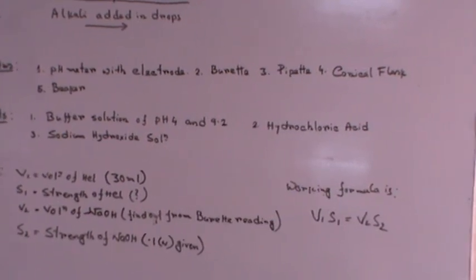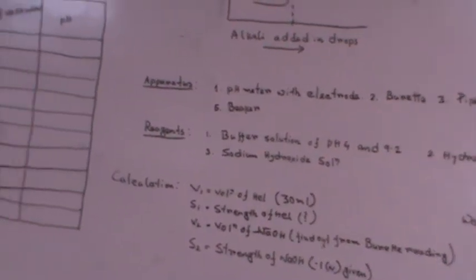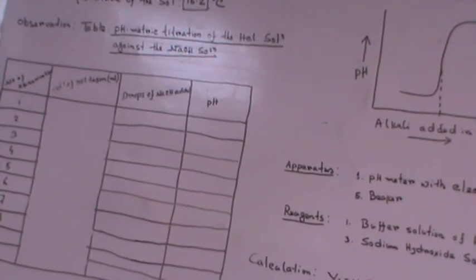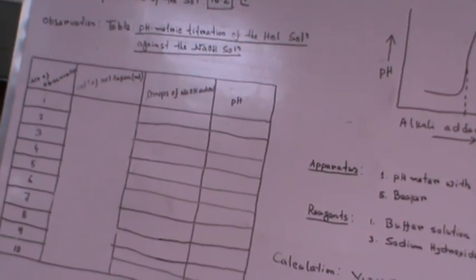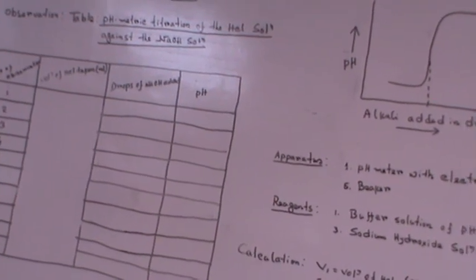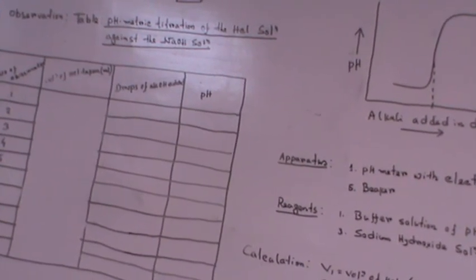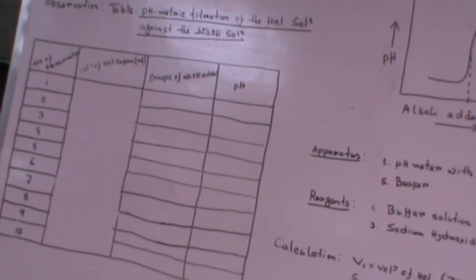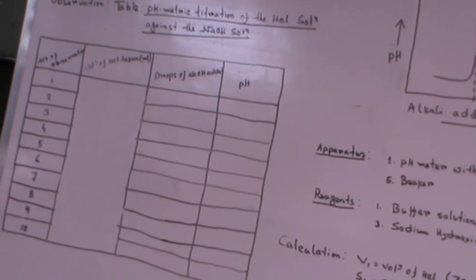So this is the working principle. Now moving to the working procedure, this is the observation table where the pH metric titration of the HCL solution against the NaOH will be done. The number of experiments you can see in the left hand side of the table.